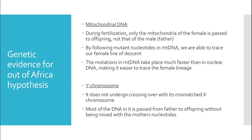For the genetic evidence supporting the out-of-Africa hypothesis, we look at mitochondrial DNA and the Y chromosome. During fertilisation, only the mitochondria of the female is passed to offspring — not the male's. By following mutant nucleotides in mitochondrial DNA, we can trace a female line of descent. Mutations in mitochondrial DNA occur much faster than in nuclear DNA, making it easier to trace female lineages. The Y chromosome, characteristic of males, does not undergo crossing over with its mismatched X chromosome, so most of its DNA is passed from father to offspring without mixing with the mother's nucleotides — allowing us to trace male lineage.